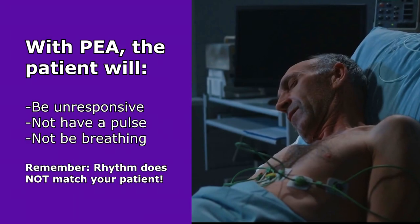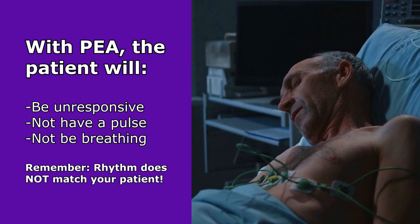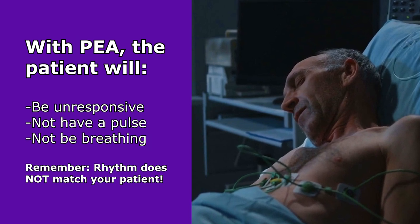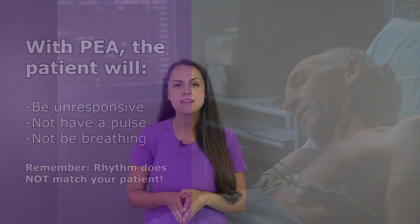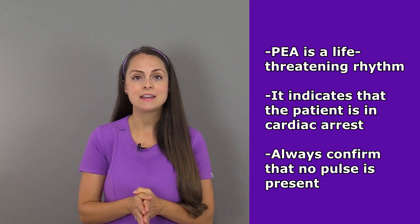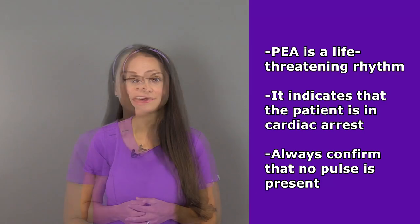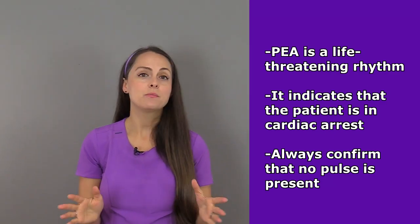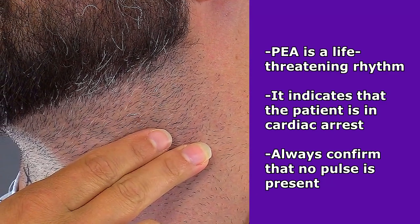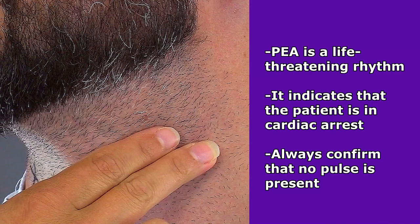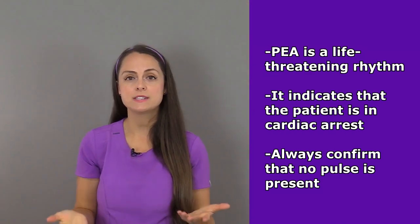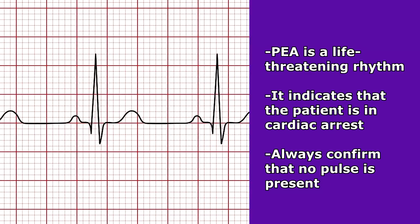But it's anything but normal, because whenever you go to check your patient, your patient will be unresponsive. They will not have a pulse and they won't be breathing. PEA is a life-threatening rhythm, and it indicates that your patient is in cardiac arrest. Therefore, as a nurse, it's always important that you check your patient — feel that pulse to confirm your findings with what you're seeing on that ECG reading.